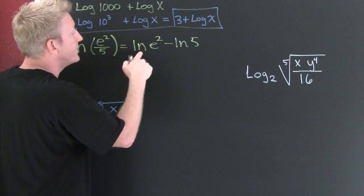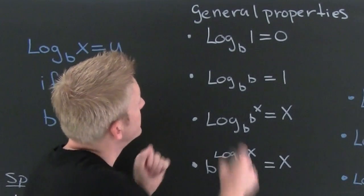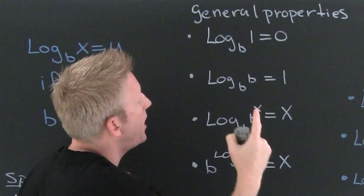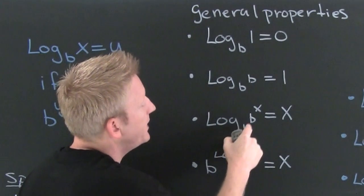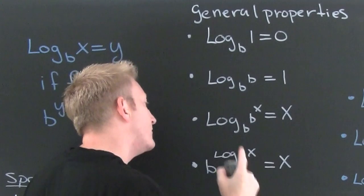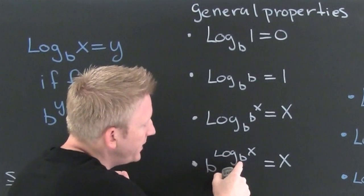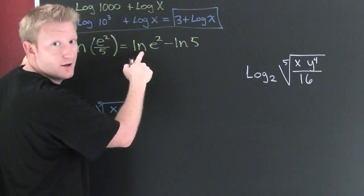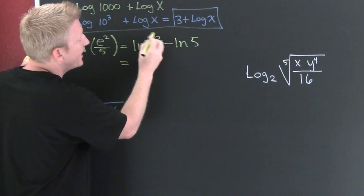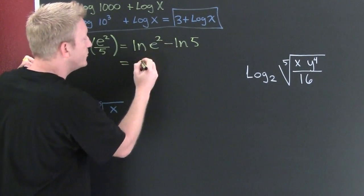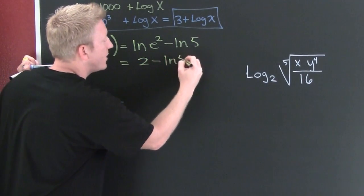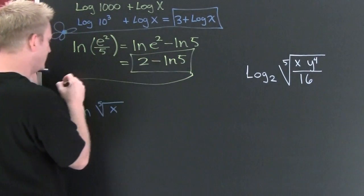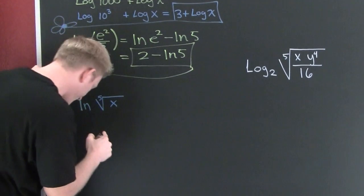We're going to use one of our special log properties. Some general properties of logarithms: log base b of 1 is 0 every single time, log base b of b is 1 every single time, log base b of b to the x is x every single time, and b to the log base b of x is x every single time. So then I can either bring that 2 down or I can see that's log base e of e to the 2 which is going to be 2, minus the natural log of 5.